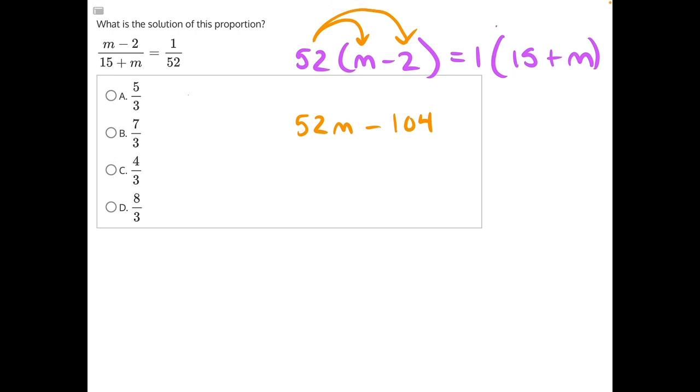But if you want to do it the standard way, you could go like this also: 2 times 2 is 4, 2 times 5 is 10. On the other side, anything times 1 is just itself. So this will just equal 1 times 15 is 15, plus 1 times m is m.